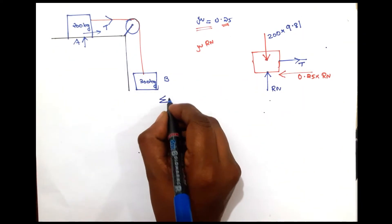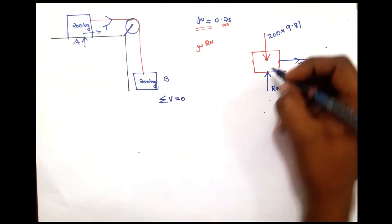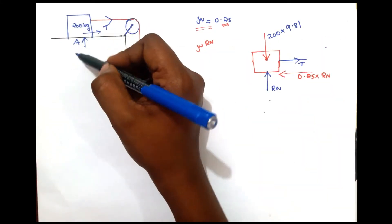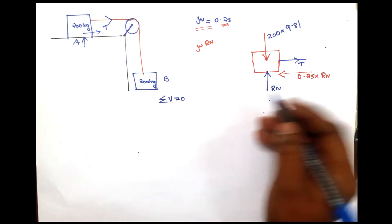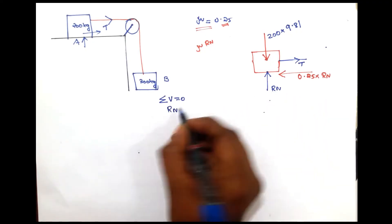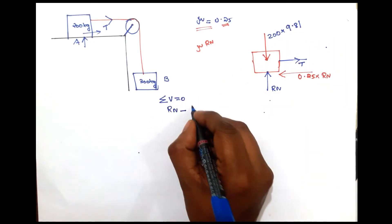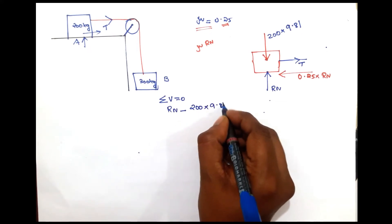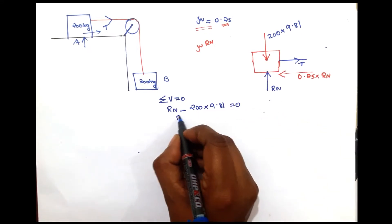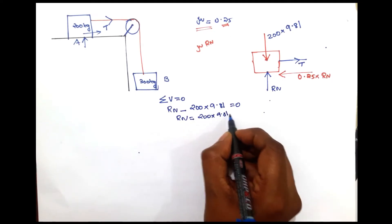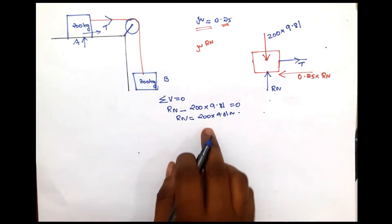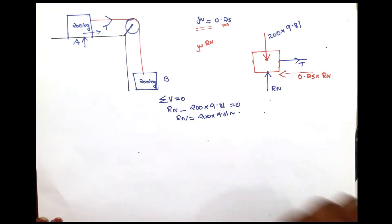Now we apply the equations. First, the net force in the vertical direction equals zero. Taking upward as positive: RN minus 200 into 9.81 equals zero. Therefore, the reaction force RN equals 200 into 9.81 Newtons.